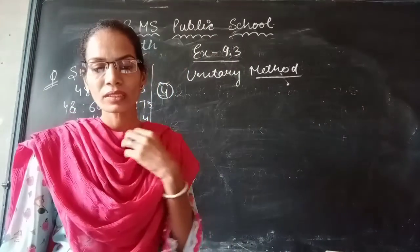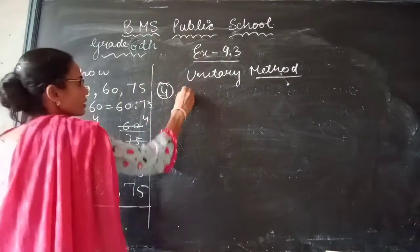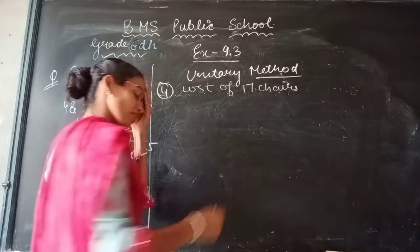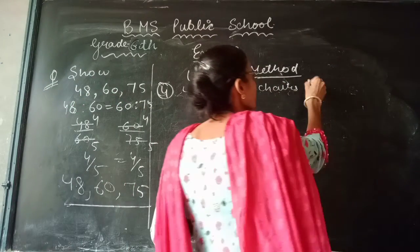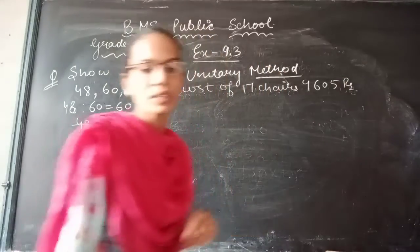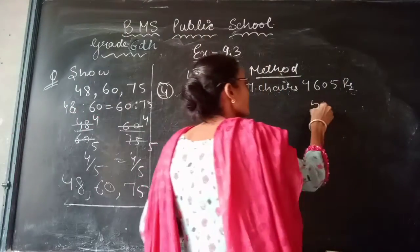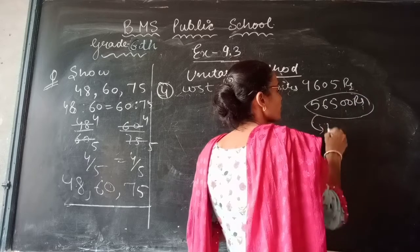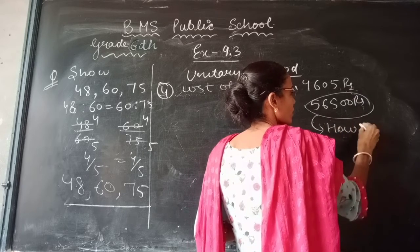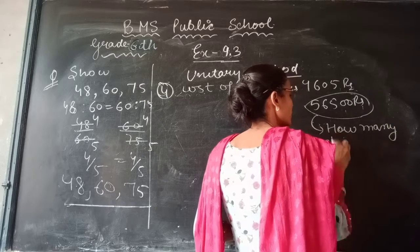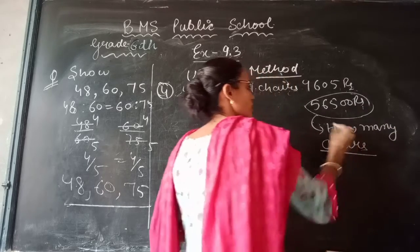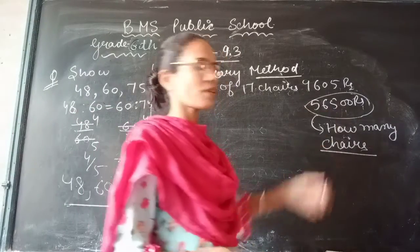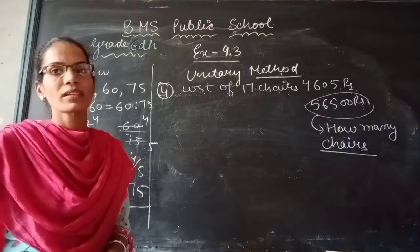Now another unitary method question. The cost of 17 chairs is ₹9,605. Find how many chairs can be purchased for ₹56,500. So we need to find the number of chairs you can purchase with ₹56,500.